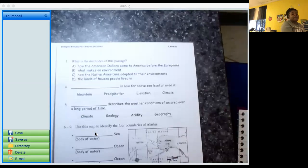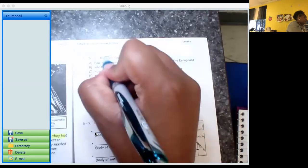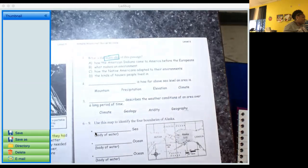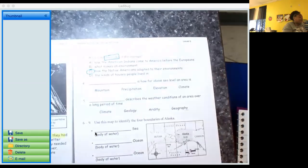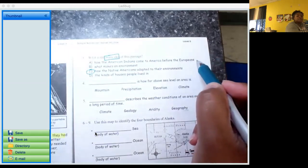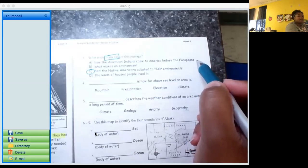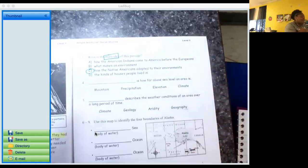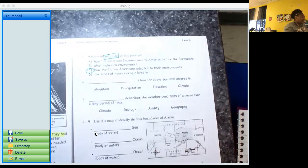Alright, number three, another main idea question. What is the main idea of this passage? So what was this passage mainly about? Take a second to read over your options. Okay, and what you should choose is C, how the Native Americans adapted to their environments. Yeah, we talked about how the Native Americans were here thousands of years before the Europeans. That's a supporting detail. That's not what this passage was mainly about. Yeah, we talked about environment a little bit, but that's not what the passage was mainly about. The passage was mainly about how the Native Americans adapted to their environments.